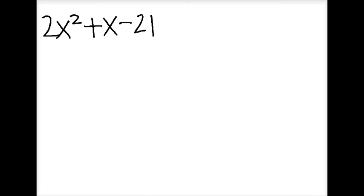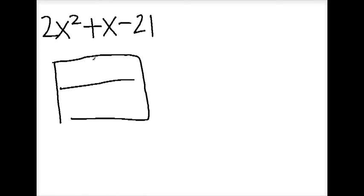Another example to factor polynomials is 2x squared plus x minus 21. For this problem, you're going to need to use the box method. The first step is to write out the parts that go inside the box. So 2x squared goes in the left top corner box, and in the right bottom corner goes negative 21.